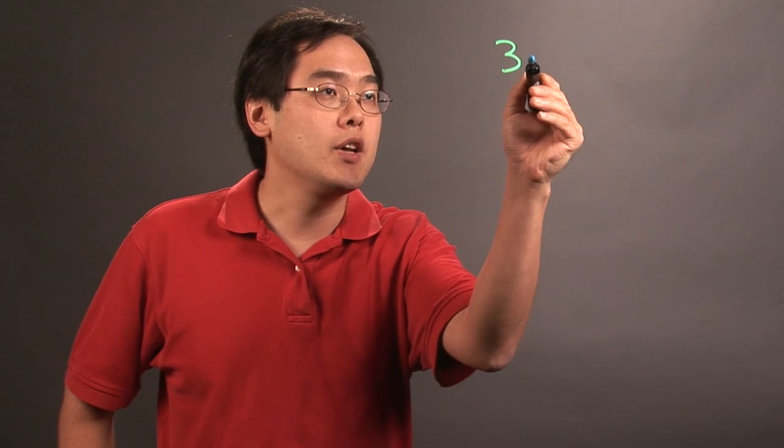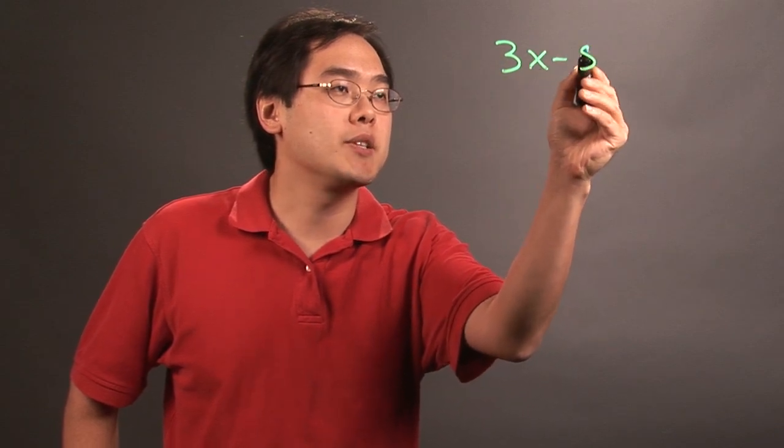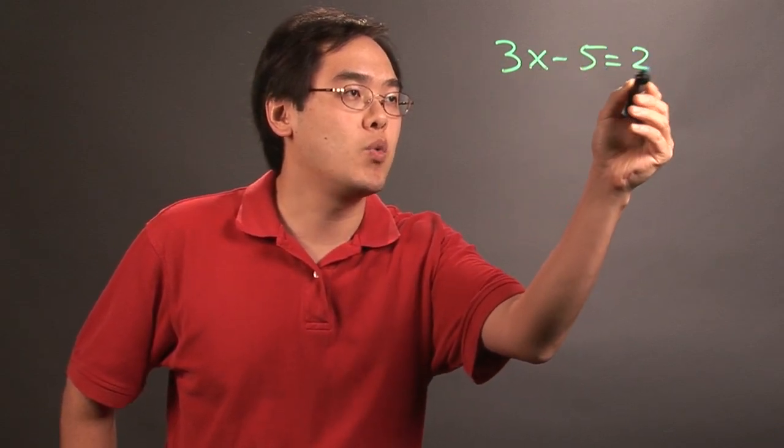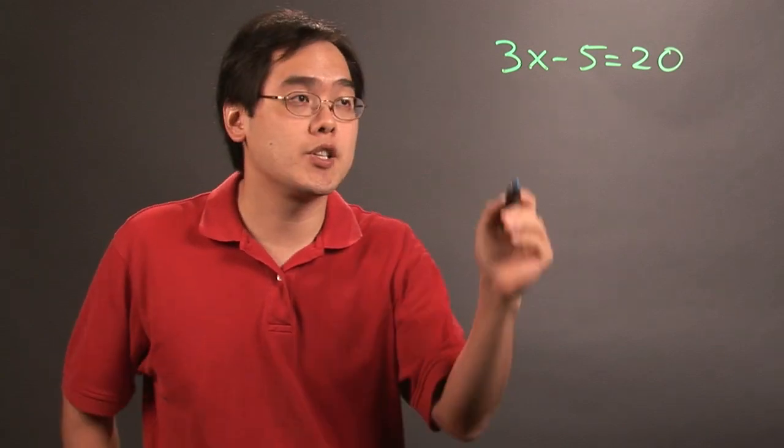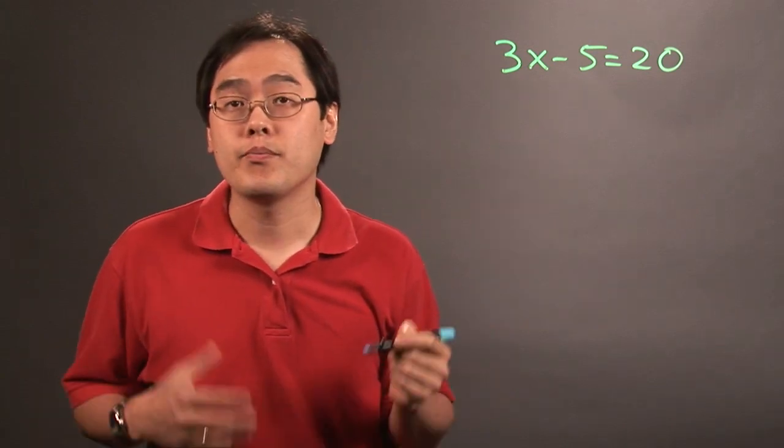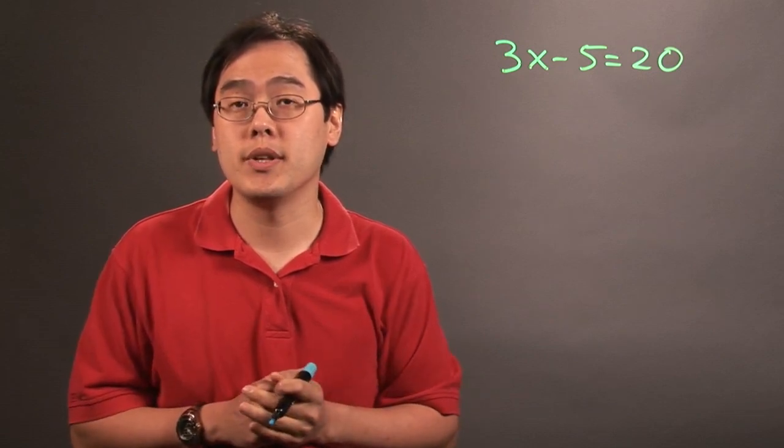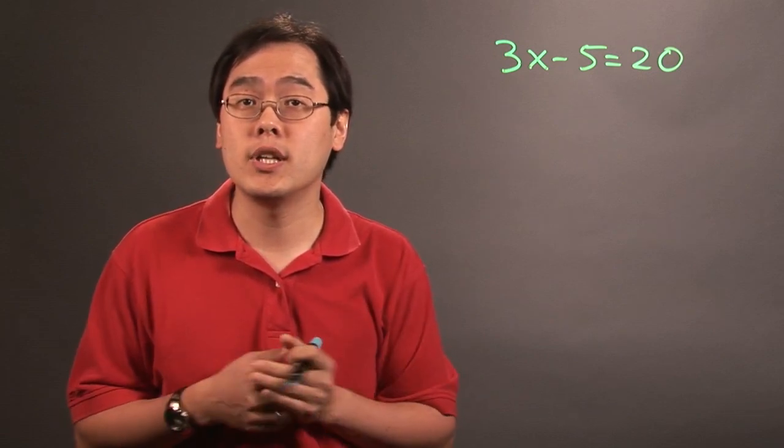So if you have the equation 3x minus 5 equals 20, the idea here is this is a subtraction equation because it involves subtraction and can be completed in two steps. So first let's see how this works.